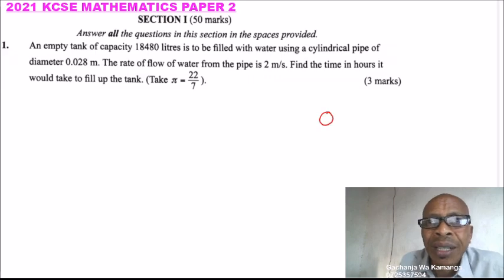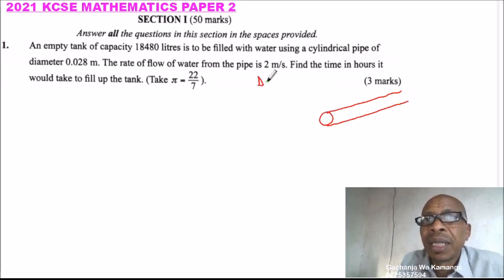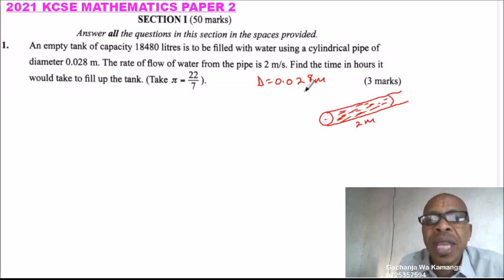So this is our pipe that is bringing in water or filling in the tank. We have been given the diameter, which is equal to 0.028 meters. If we take these 2 meters, we can find how much water is flowing in 1 second in terms of volume. That is the water being poured into the tank within 1 second. Once we get the volume being poured into the tank in 1 second, we can divide with the total volume of the tank to get the time.